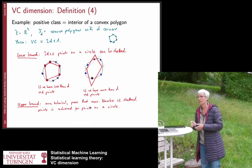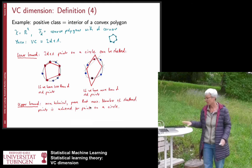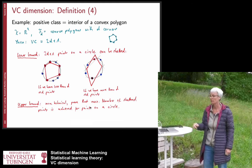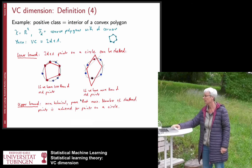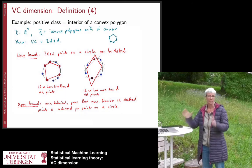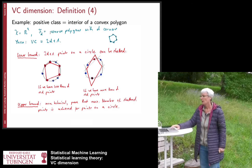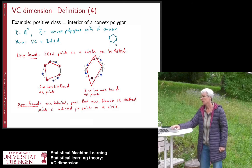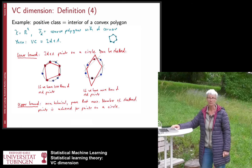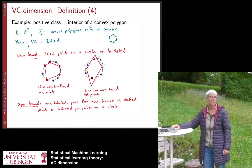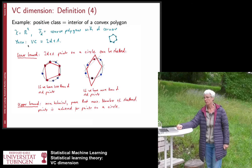Here is yet another example. We are in R² and the function class is convex polygons with d corners. You can prove that the VC dimension of this function class is 2d+1.